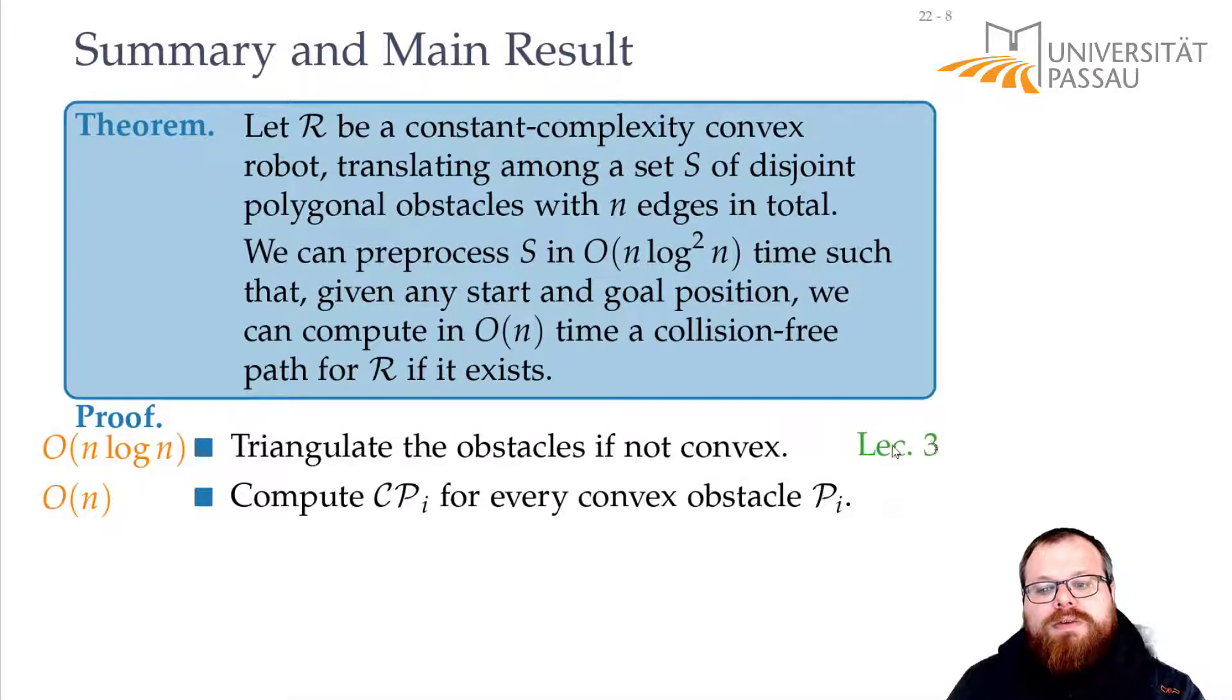However, we know from lecture 3 that the total complexity of this triangulation is still linear. So, we still have a linear number of corners in our obstacles. So, we still have linear complexity.